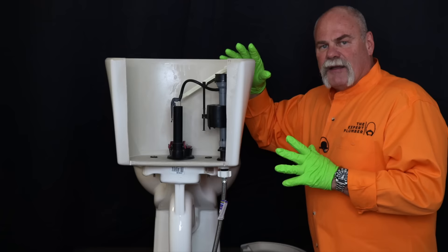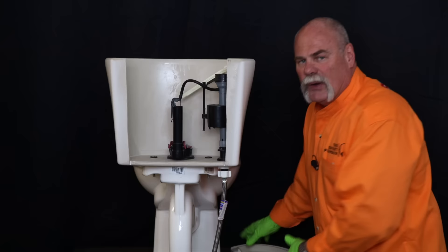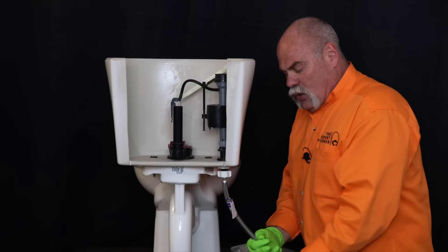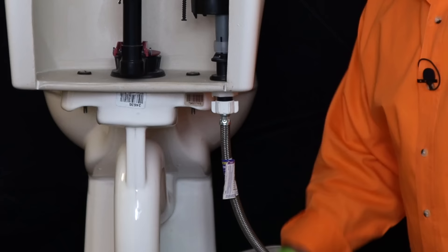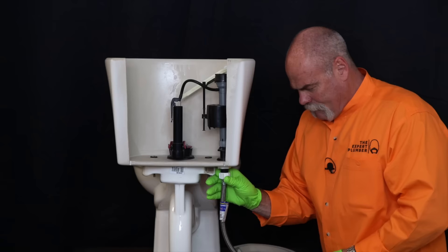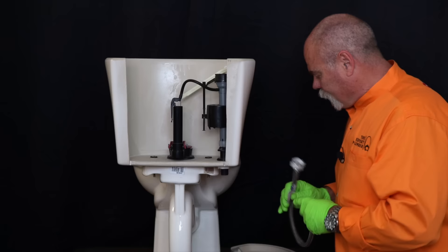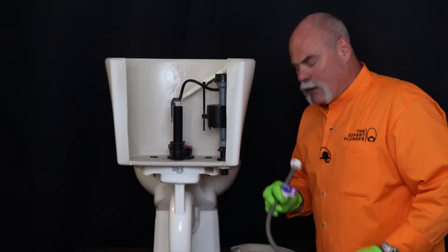First thing I'm going to do is take the lid off, set it out of the way. That way it's safe. We don't want to drop it and break it, crack it, or anything like that. Now, as you can see, we've cut the back out of this toilet to help show you what it is we're working on. So we took the angle stop, we shut the water off. We're going to put a towel down under here, and we're going to loosen this up to take apart the supply line. Whenever you take it apart, you're going to get a little bit of water to come out. And this is just the water that's in the fill valve.